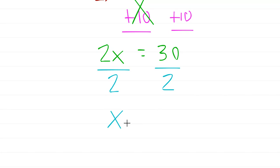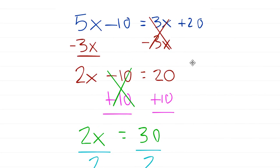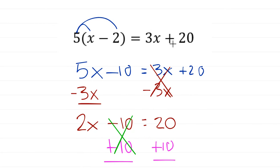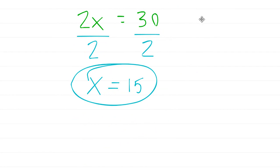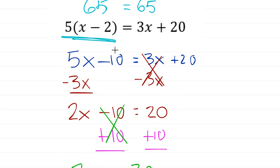You won't always get a whole number — I just picked these to be nice. Let's double-check x equals 15: plugging in, 15 minus 2 is 13, 13 times 5 is 65 on the left side. On the right, 15 times 3 is 45, plus 20 is 65. That's a true statement — 65 equals 65 — so x equals 15 is correct. To recap: I saw parentheses, applied the distributive property, simplified both sides, then got variables on one side and constants on the other.